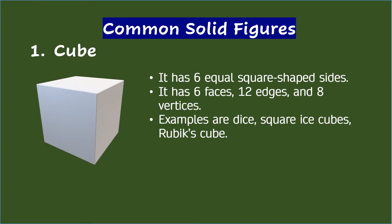Here are some of the common solid figures with their properties and examples. 1. Cube — it is a solid figure that has six square-shaped sides. A cube has six faces, 12 edges, and eight vertices. Common examples of a cube are dice, square ice cubes, and Rubik's cube.